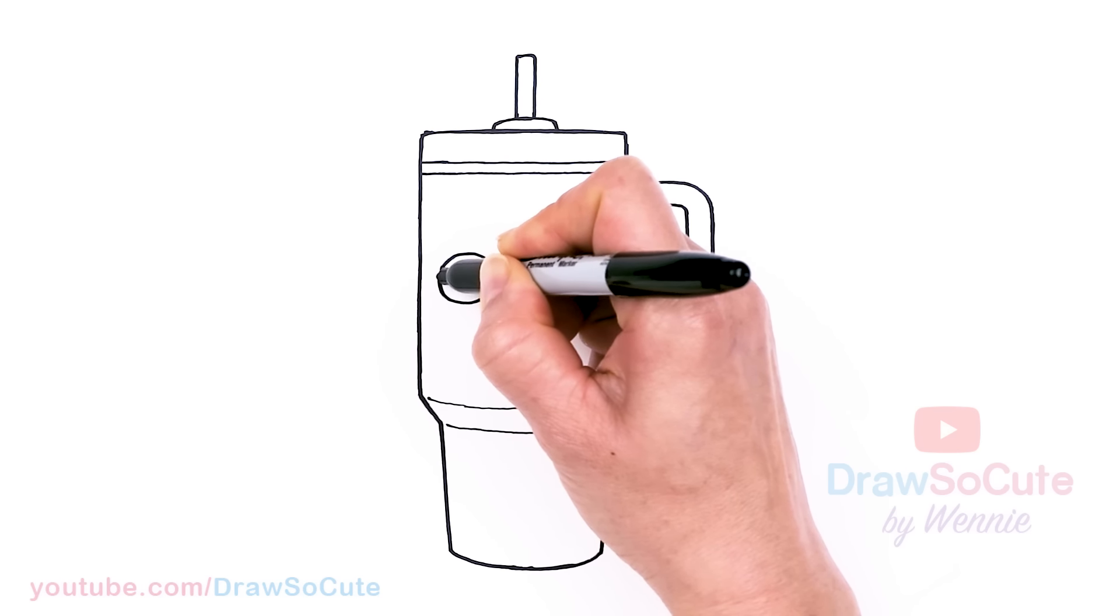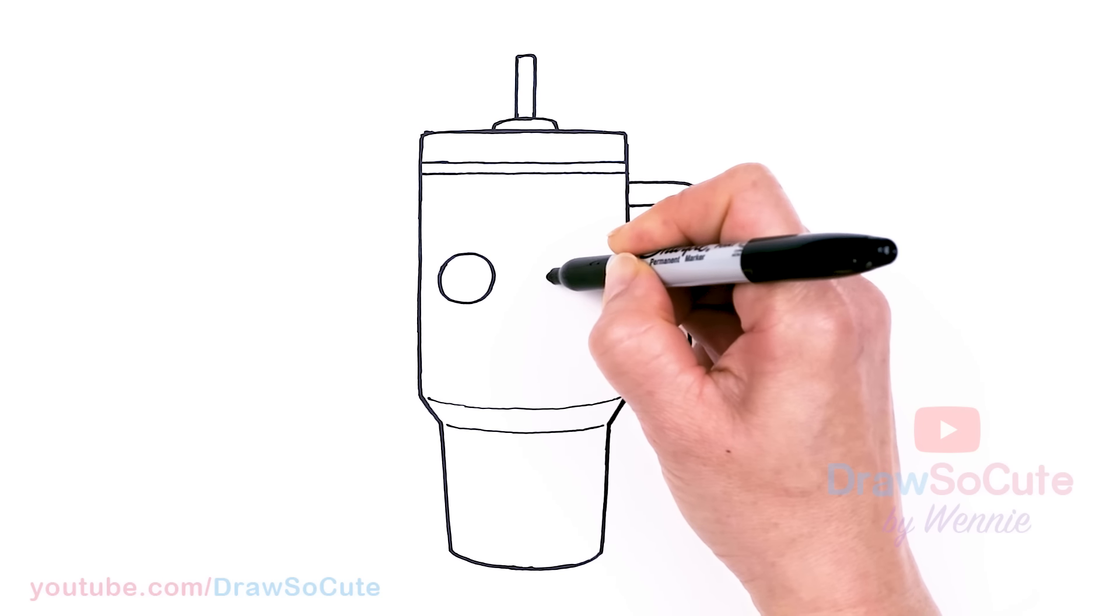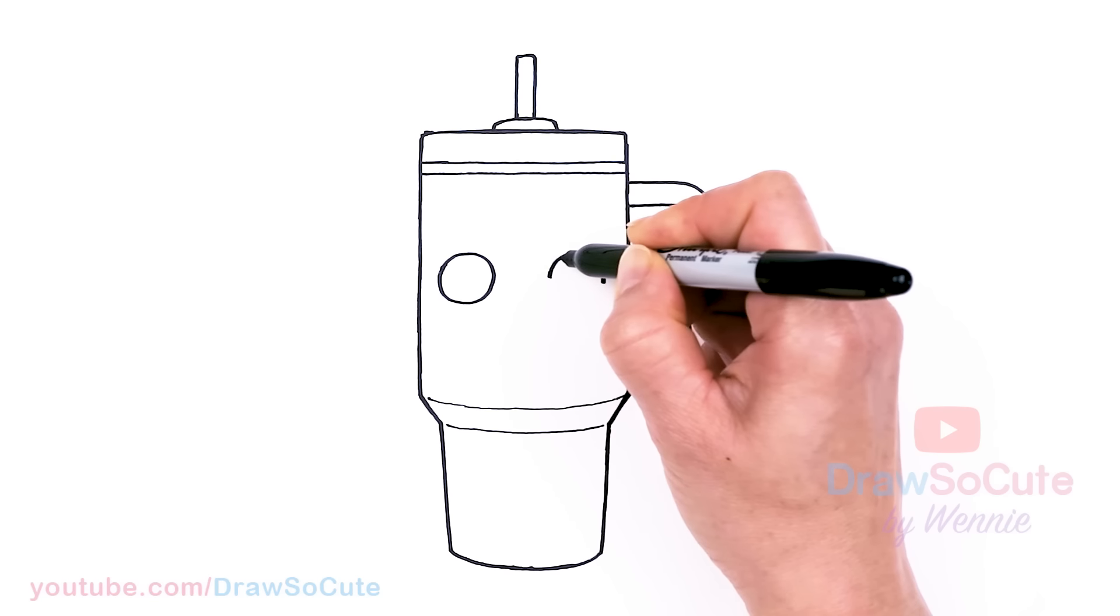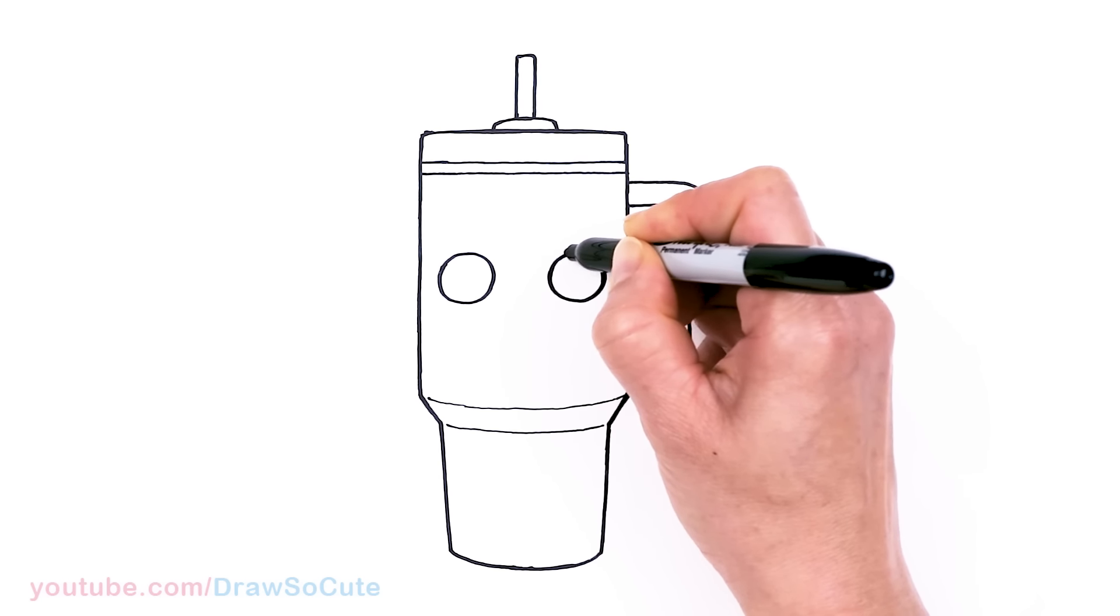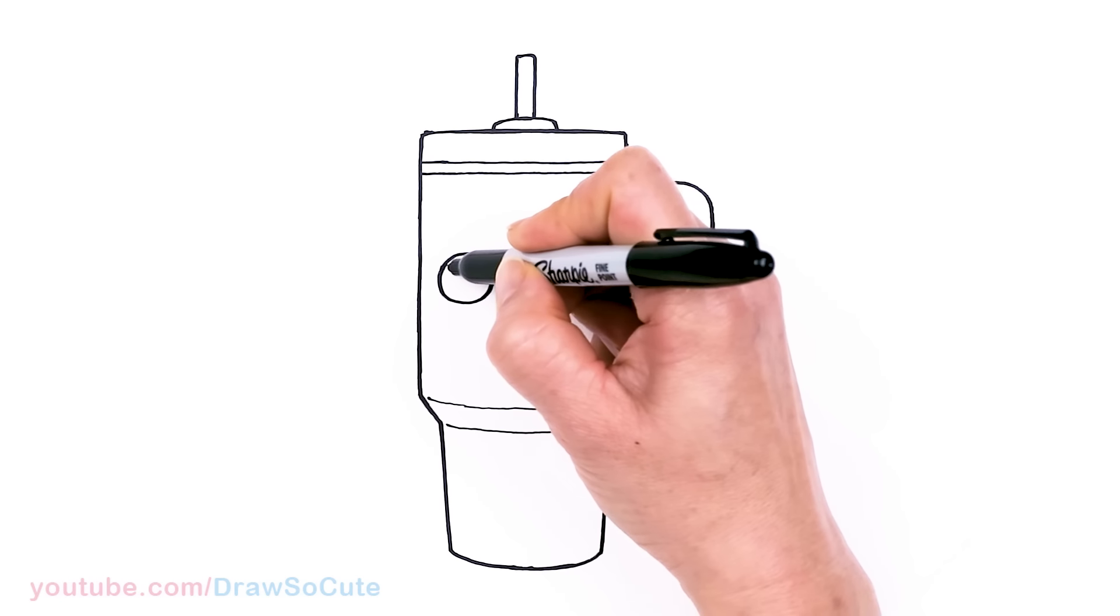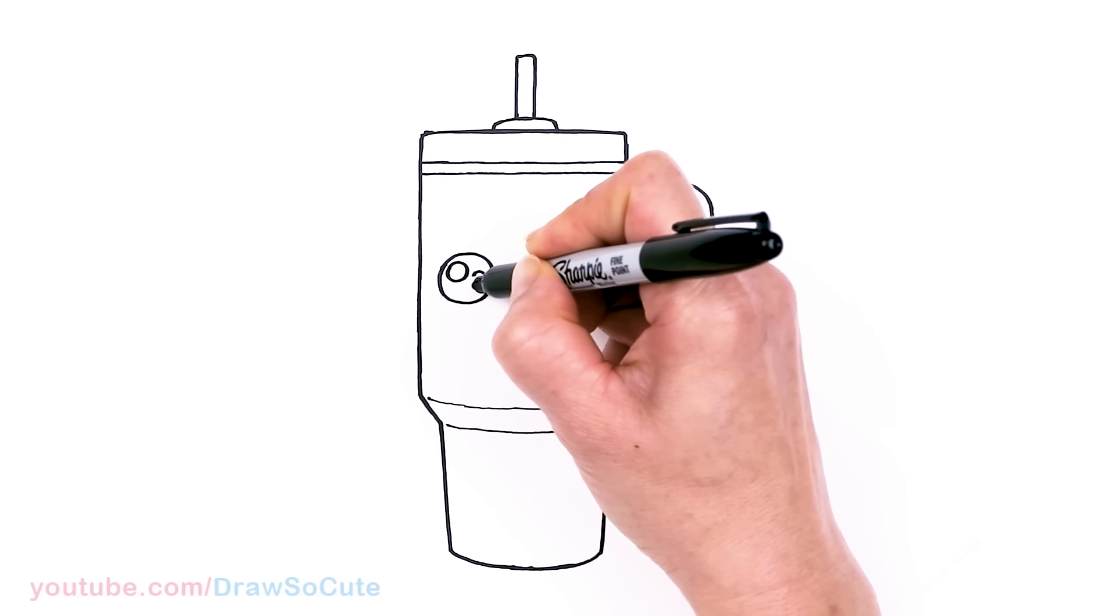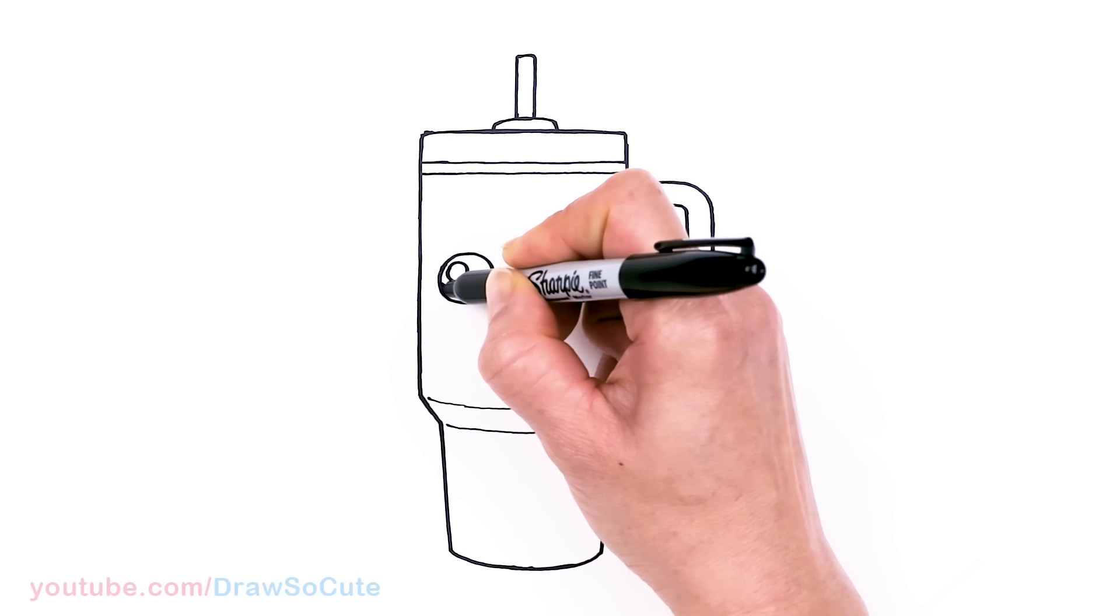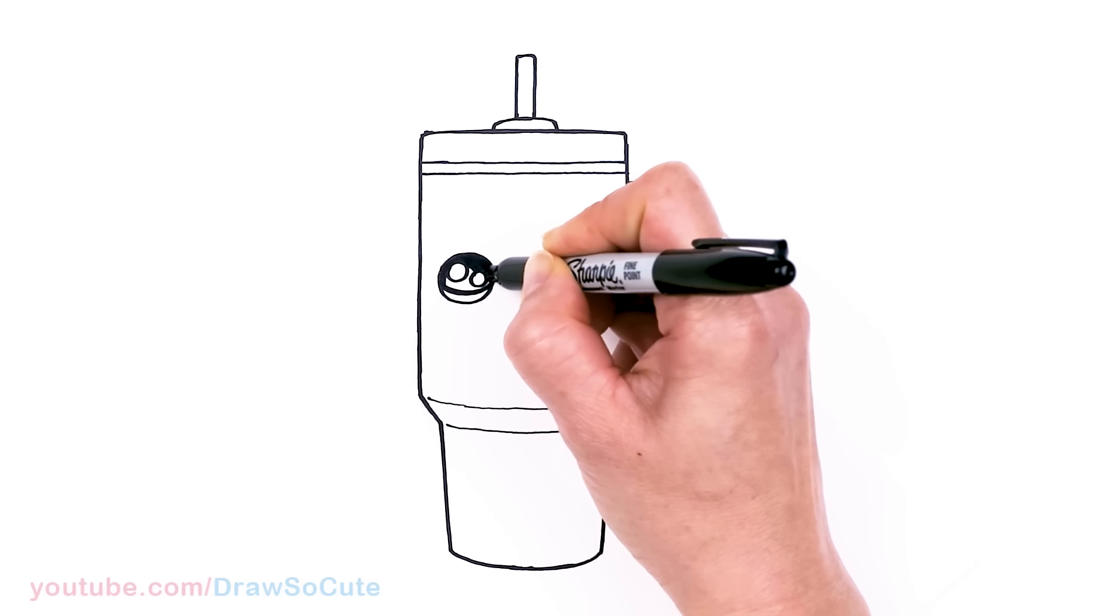So I'm going to put a big circle right here and then come across about here and draw another circle. Okay, so now we have that. Let's make them Draw So Cute eyes with two small circles inside for highlights and a curve line at the bottom. And shade in the top.